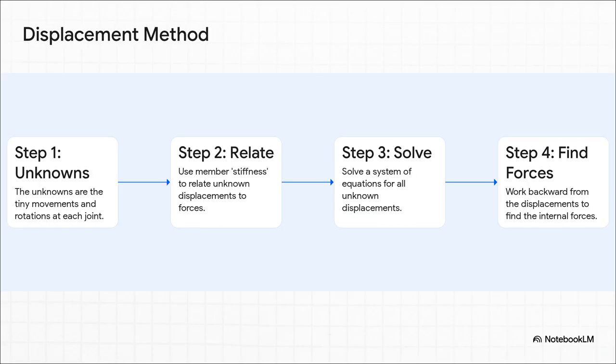The displacement method, though, it completely flips the problem on its head. It says, forget about the forces for a minute. Instead, the things we don't know, our unknowns, are the tiny little movements and rotations happening at every joint. You then build a bunch of equations that link these tiny movements to the forces using a property of the material called stiffness. Once you solve this big system of equations for all the movements, you can then just work backward to find all the internal forces. A totally different philosophy.